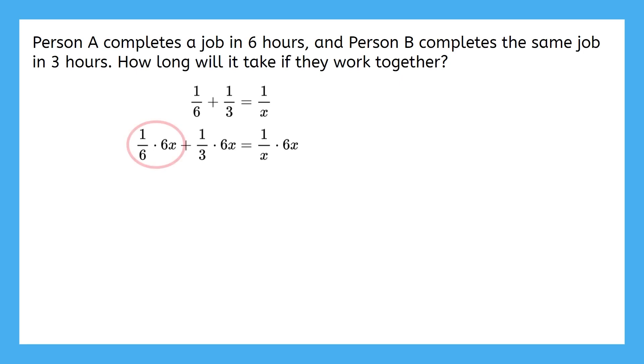So, one-sixth times 6x gives us x, one-third times 6x gives us 2x, and one-over-x times 6x gives us 6. And just like that, all the fractions are gone. Finish solving by combining like terms and dividing by 3.